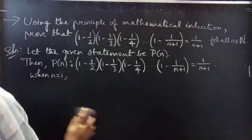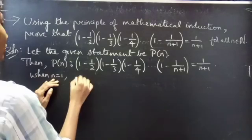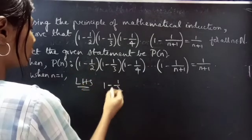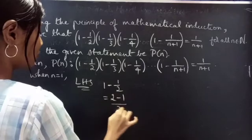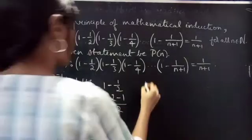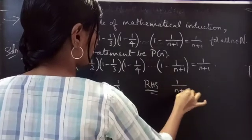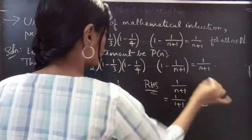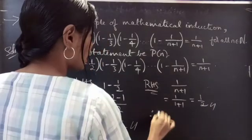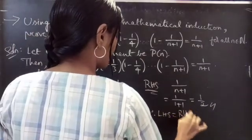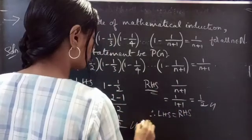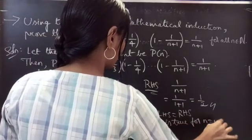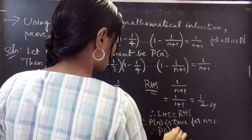Let's show the statement is true for n = 1. The LHS takes only the first term: 1 - 1/2 = (2-1)/2 = 1/2. For the RHS, we have 1/(n+1); putting n = 1 gives 1/(1+1) = 1/2. Since LHS = RHS, the statement is true for n = 1. Therefore, P(1) is true.